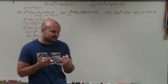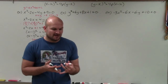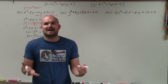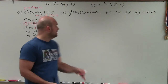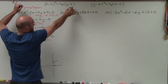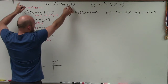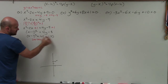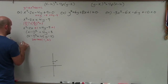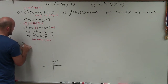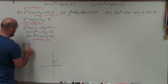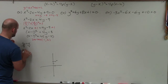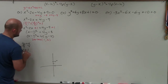The distance from my vertex to my focus is p. Since 4p is multiplied by the linear term, and my 4 here gives us 4p = 4, I divide both sides by 4 and get p = 1.